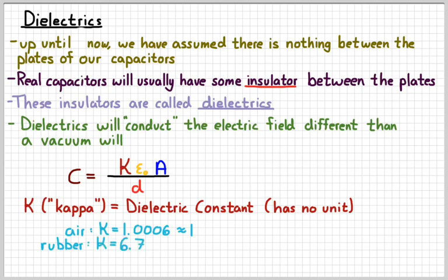Rubber, which is a common insulator, however, has a kappa, dielectric constant, of 6.7. And again, there's no units behind that. And so, rubber is a common insulator. Inserting that rubber in between the plates of a capacitor will increase the capacitance and allow you to store more charge on there when it's connected to the same voltage.